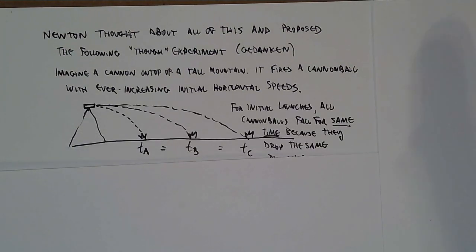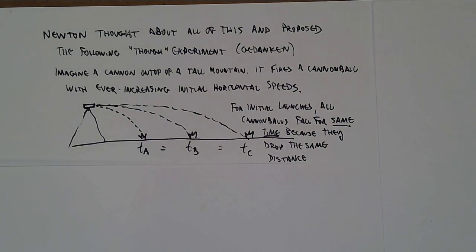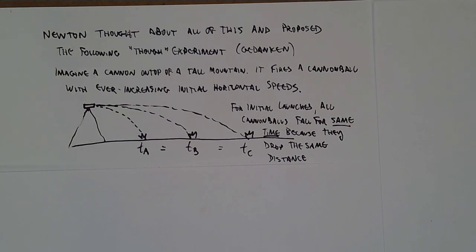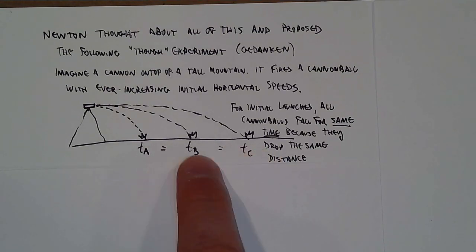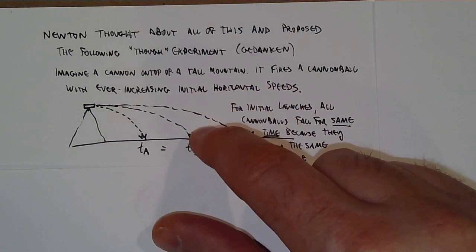In the initial scenario, if we fire the cannonball from a consistent horizontal distance above the ground, the key idea is that if an object drops the same vertical distance, it doesn't matter how fast it's fired - it will take the same amount of time to hit the ground. Gravity doesn't care that you're moving horizontally and will accelerate you downward at the same rate. So cannonballs A, B, and C will all hit the ground at the same time because they're all dropping the same vertical distance.